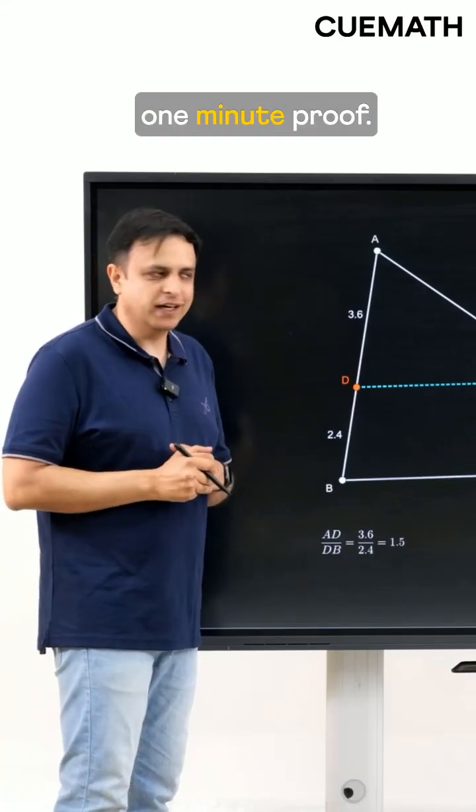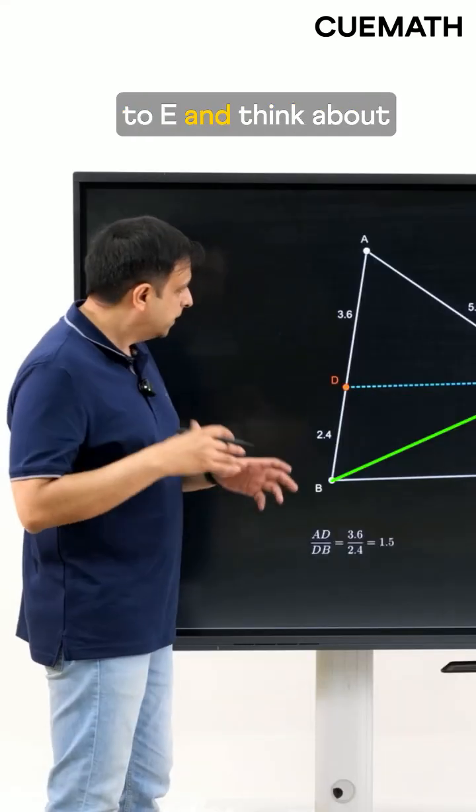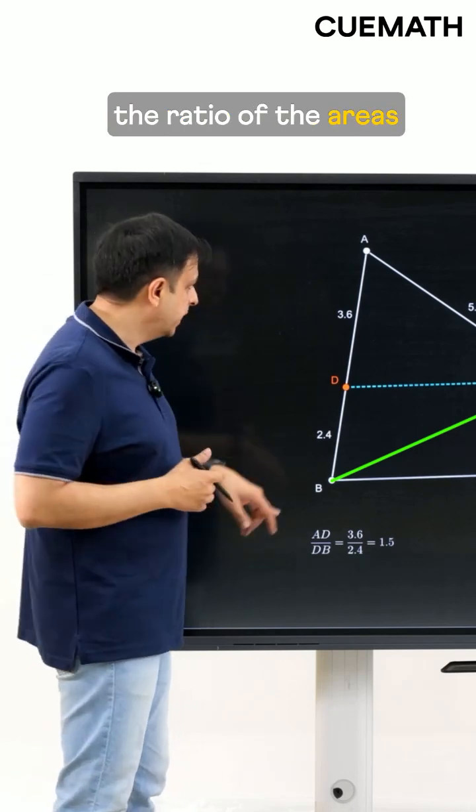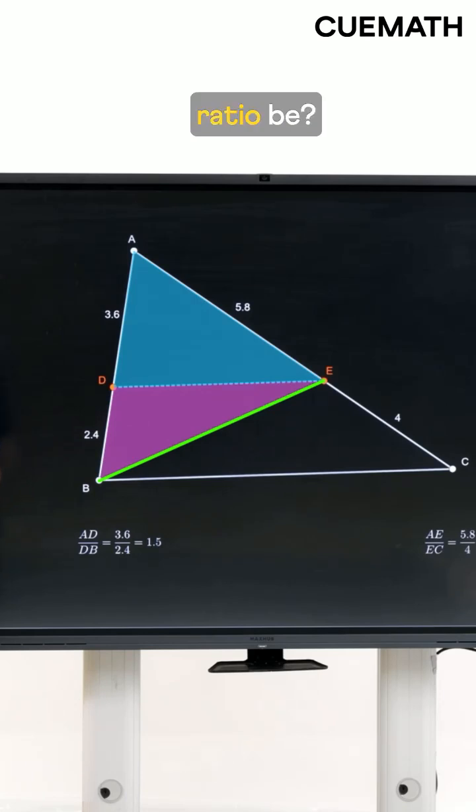Here's a really elegant one minute proof. So first we join B to E and think about the ratio of the areas ADE to DBE. What will this ratio be?